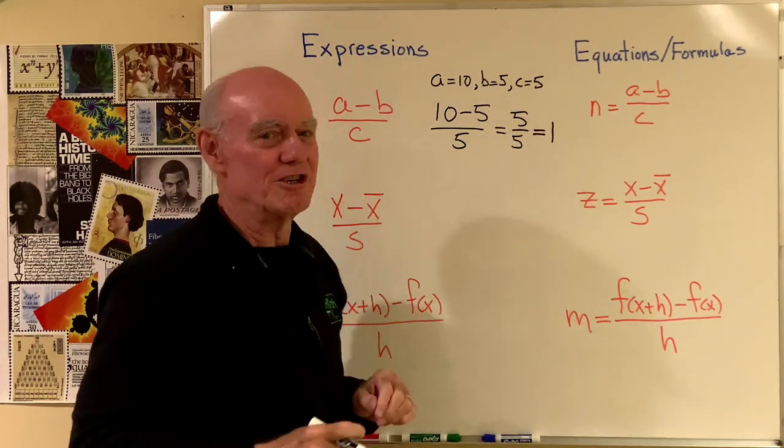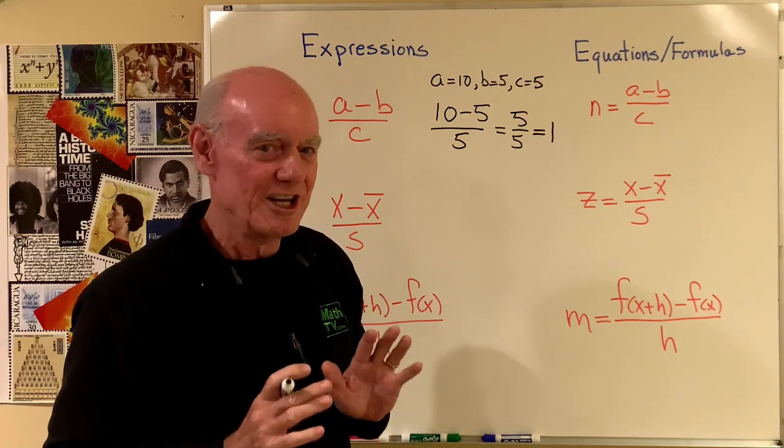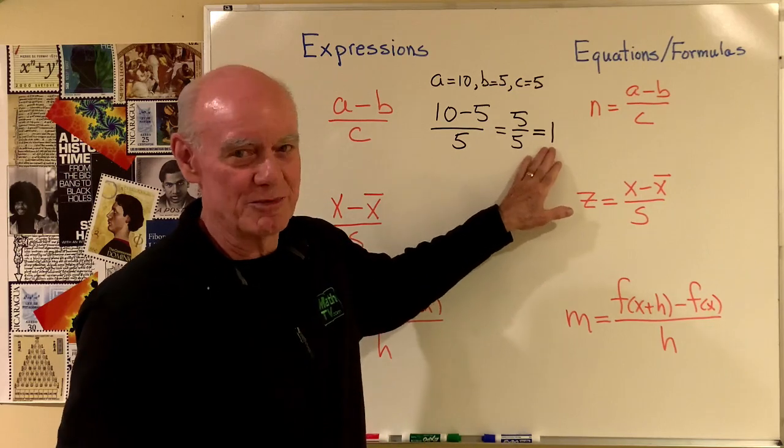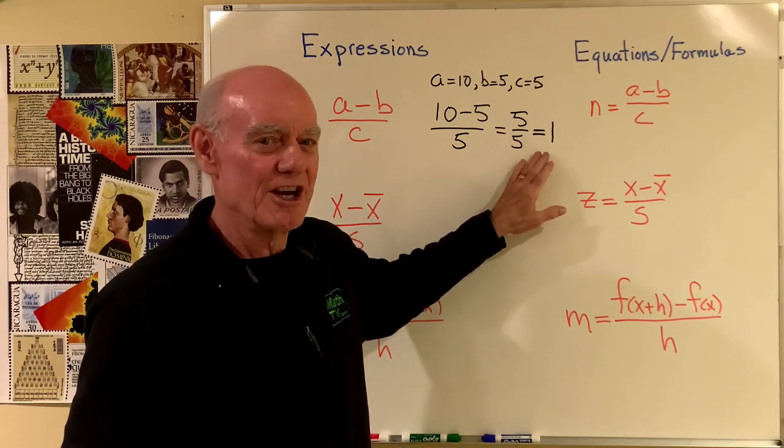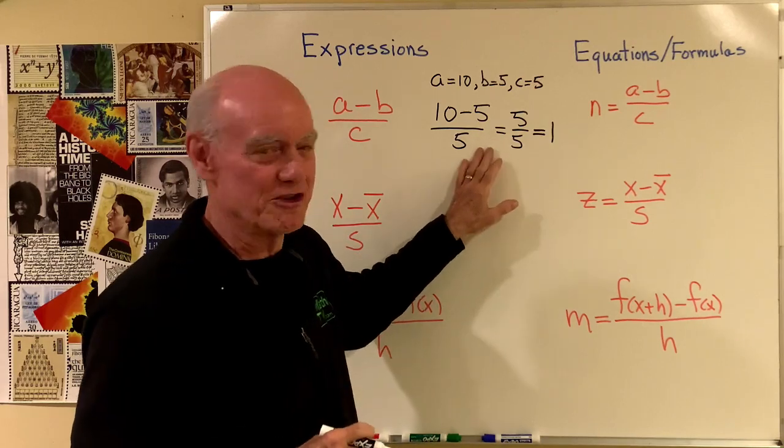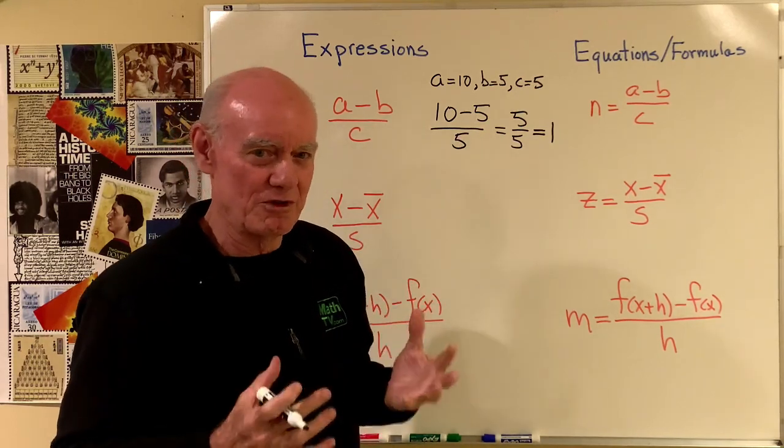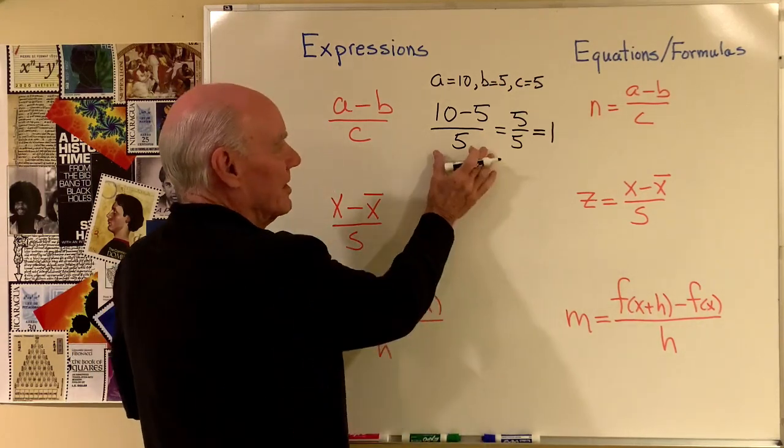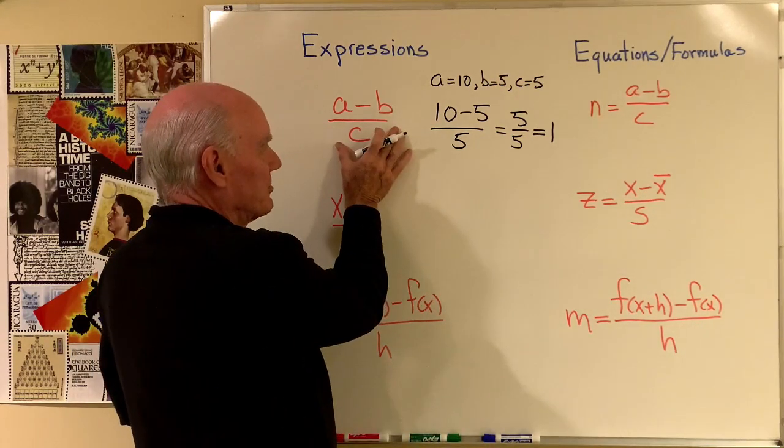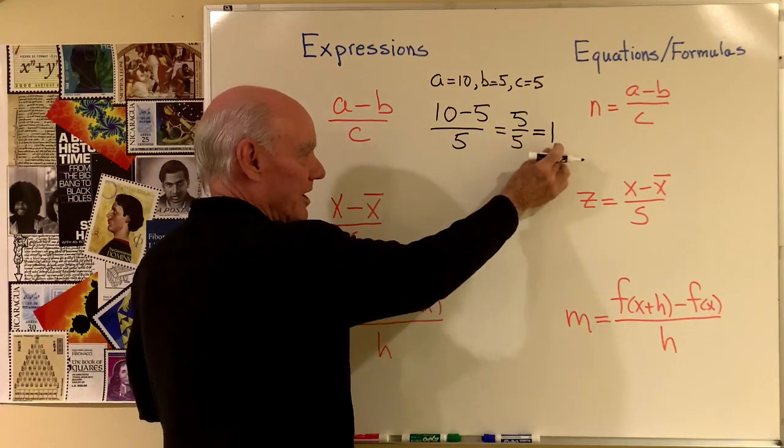Now here's what you need to do. Try the same problem on your calculator. Make sure that you can work your calculator in such a way that this answer comes out to be 1. If you end up with an answer of 9, you're not using your calculator correctly to do this problem. Very common mistake in statistics. People have trouble with their calculators. So this form right here, A minus B over C. Here I've substituted in some values, done the work, I get 1.